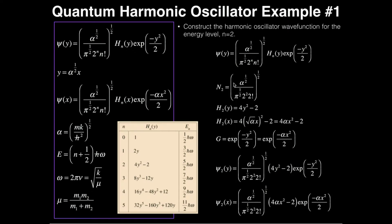Let's first look at the normalization constant at n equals 2. We have alpha to the one-half, pi to the one-half, and we replace the n's with 2: so 2 to the second power, and then 2 factorial. We're just setting it up — not solving these numbers yet. If we were at n equals 3, it would be 2 to the third times 3 factorial. So we're just doing this piecewise.